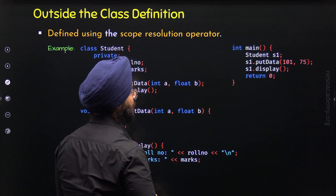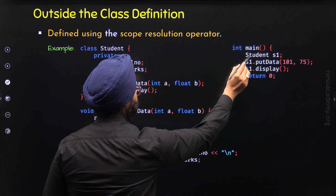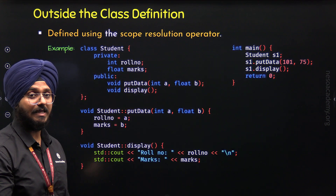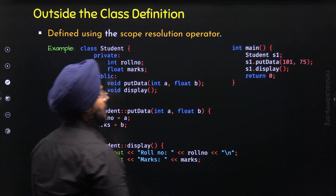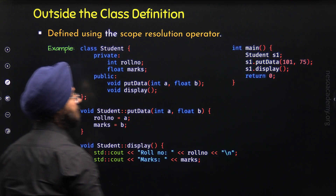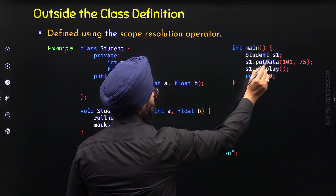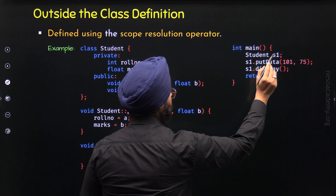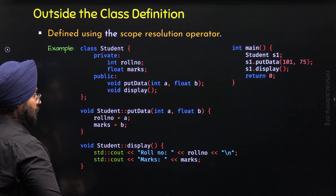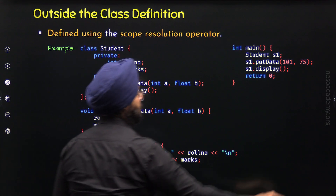Here is the main function. Inside the main function, I have defined S1 as the object of the student class. We learned how to define the object of a specific class in the last lecture. With the help of this object, we can access the public members of this class. Here, I am calling the putData function through the S1 object, and passing values 101 and 75 to its parameters. Variable A will receive value 101 and variable B will receive value 75.